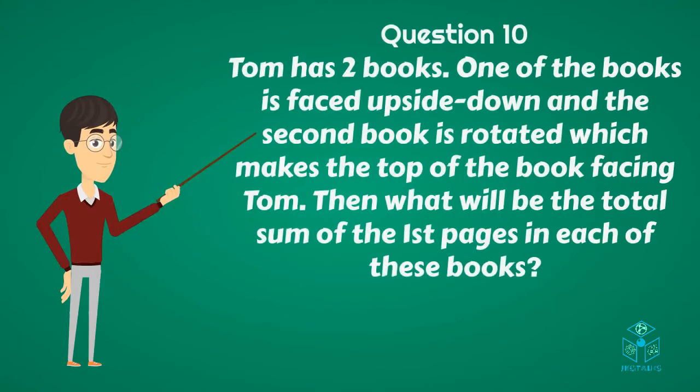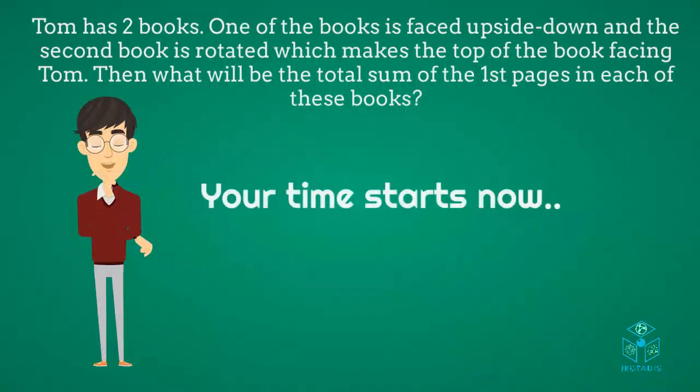Question 10. Tom has 2 books. One of the books is faced upside down and the second book is rotated which makes the top of the book facing Tom. Then what will be the total sum of the first pages in each of these books? Your time starts now.